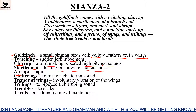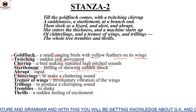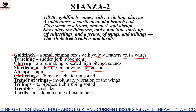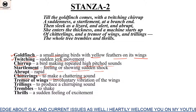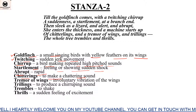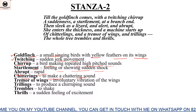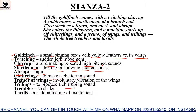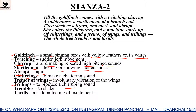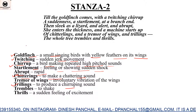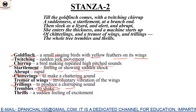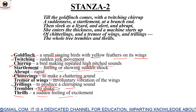'Abrupt' means rapid. 'Chitterings' means to make a chattering sound — there are several synonyms used here for the chirping sound. 'Tremor of wings' means involuntary vibration of the wings — if the wings of a bird are not fully matured, when they try to flap them you observe a vibration. 'Trilling' means to produce a chirrupping sound. 'Tremor' means to shake, and 'thrills' means a sudden feeling of excitement.